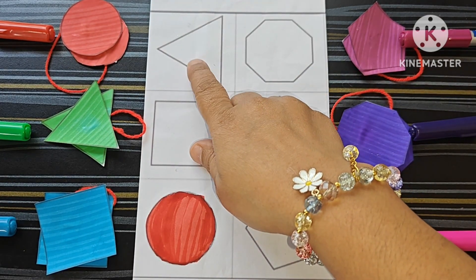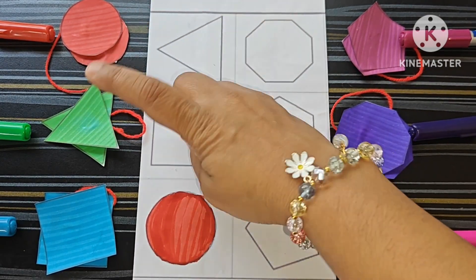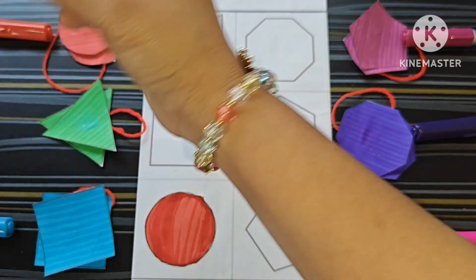Now this is triangle. What is the color of the triangle? Light green, so we will color it.